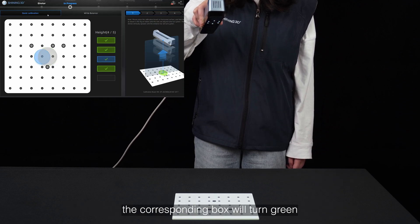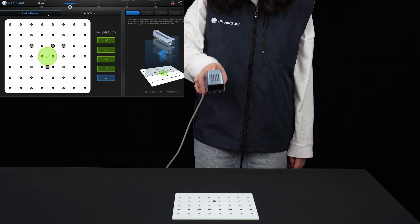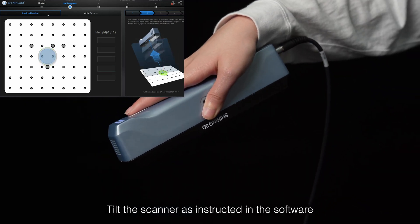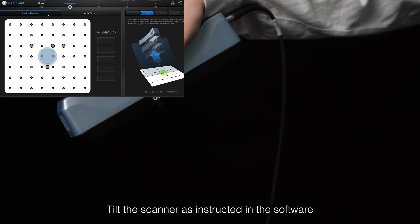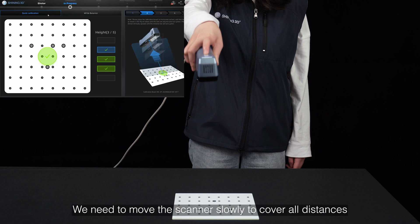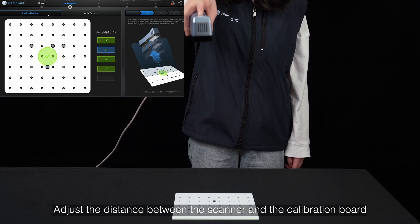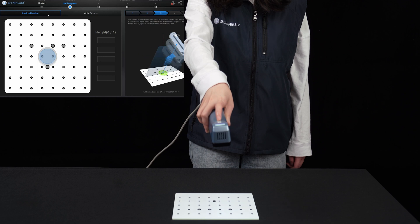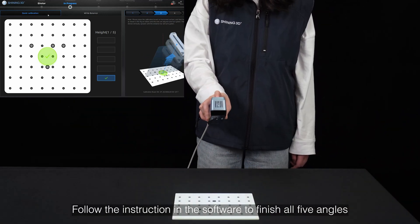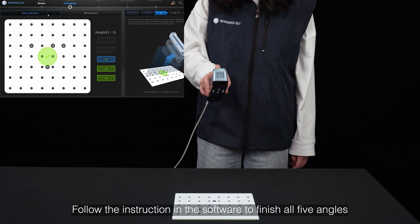the corresponding box will turn green and a tick will appear. Tilt the scanner as instructed in the software. We need to move the scanner slowly to cover all distances and adjust the distance between the scanner and the calibration board. Follow the instruction in the software to finish all five angles.